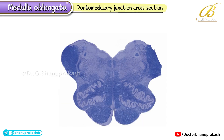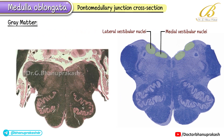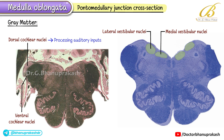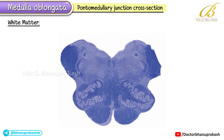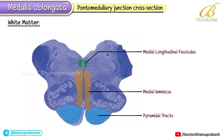Finally, at the pontomedullary junction, we see a cross-section that largely resembles the olive-level medulla, but with a few changes. In the gray matter, the vestibular nuclei at this level include the lateral vestibular nucleus, replacing the inferior vestibular nucleus from lower levels. The cochlear nuclei — dorsal and ventral — also appear here, processing auditory inputs from the cochlear nerve. The white matter shows a similar arrangement to the rostral medulla, with pyramidal tracts, medial lemniscus, MLF, and tectospinal tracts in consistent relative positions.